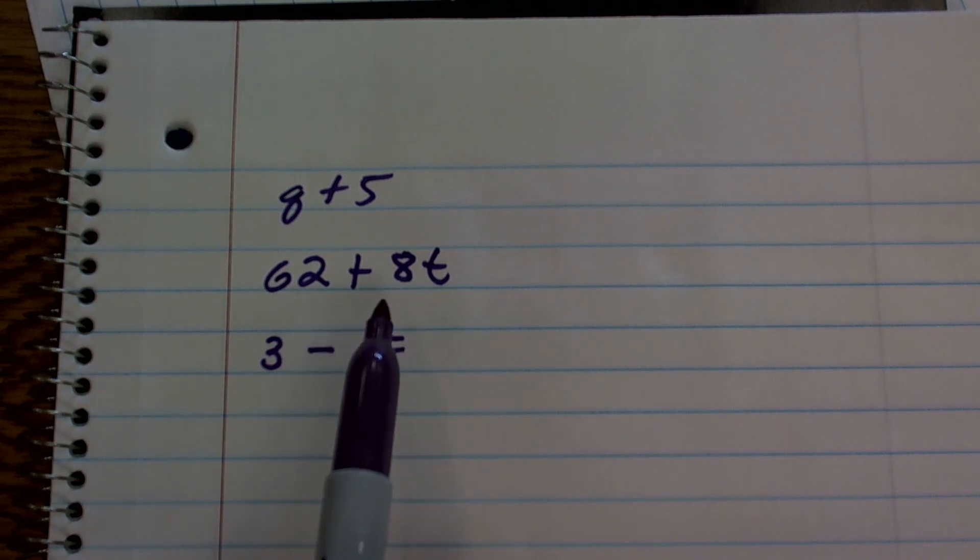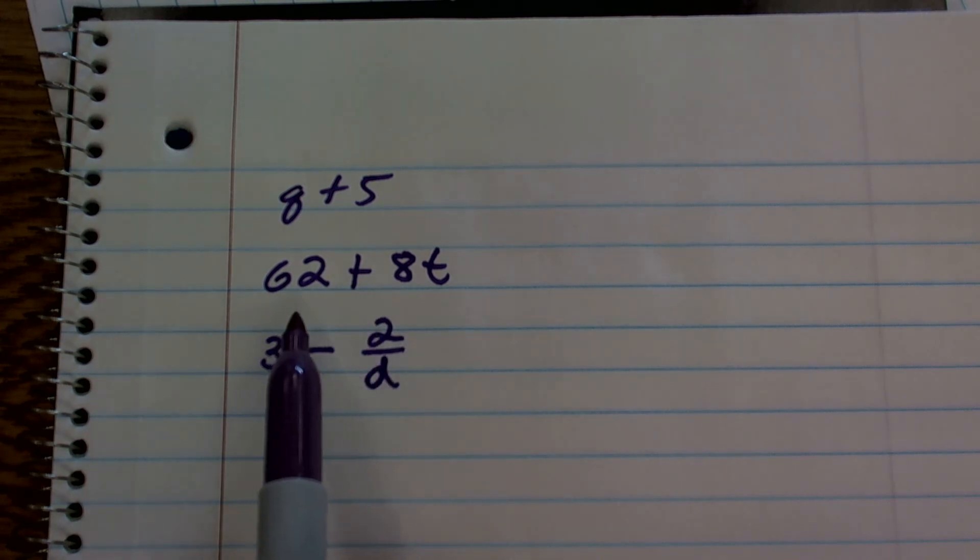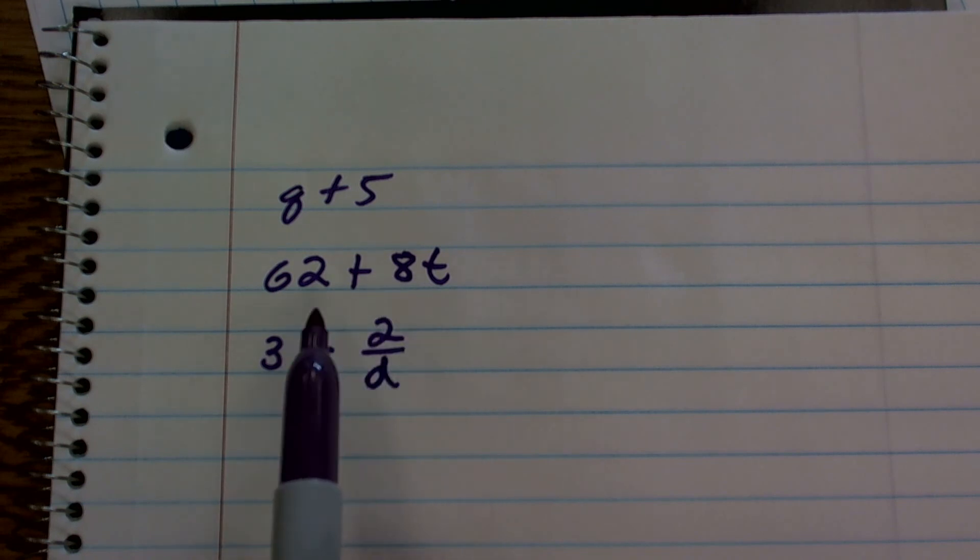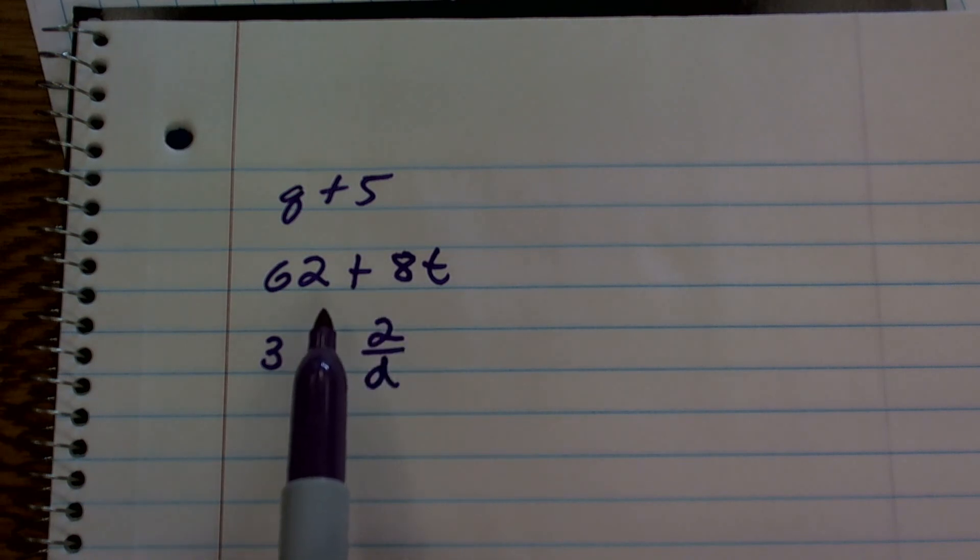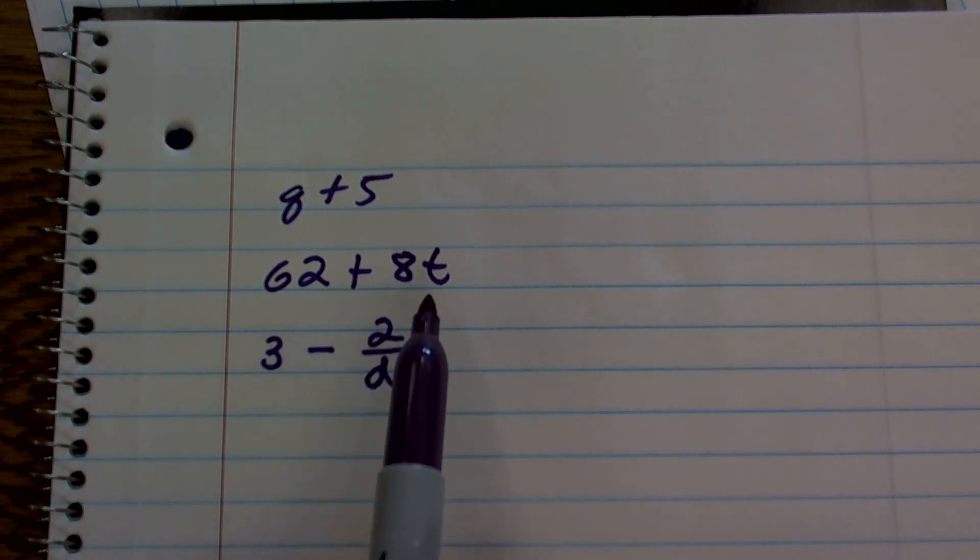So you could say 'the product of 8 and T more than 62,' or 'the sum of 62 and the product of 8 and T.'